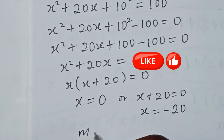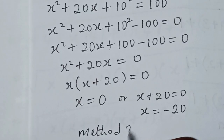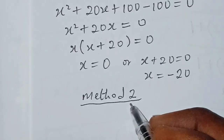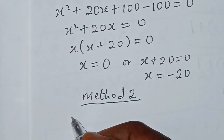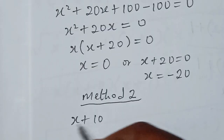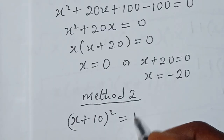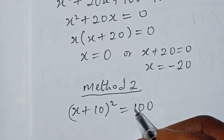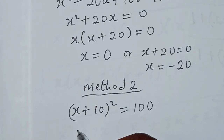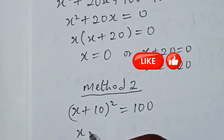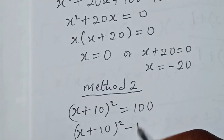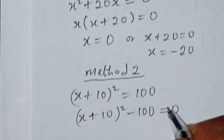Method 2: From our question (x + 10)² = 100, using the second method, the first step is to move 100 to the left-hand side, giving (x + 10)² − 100 = 0.